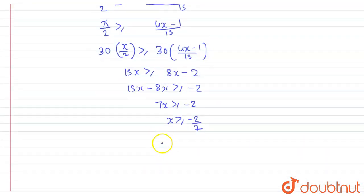So where does x belong to? Here, x belongs to minus 2 by 7 to infinity. So this point is minus 2 by 7 and infinity. Thank you.